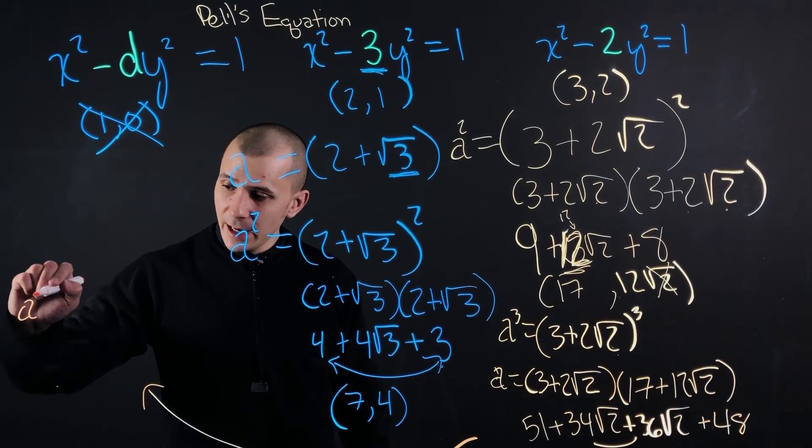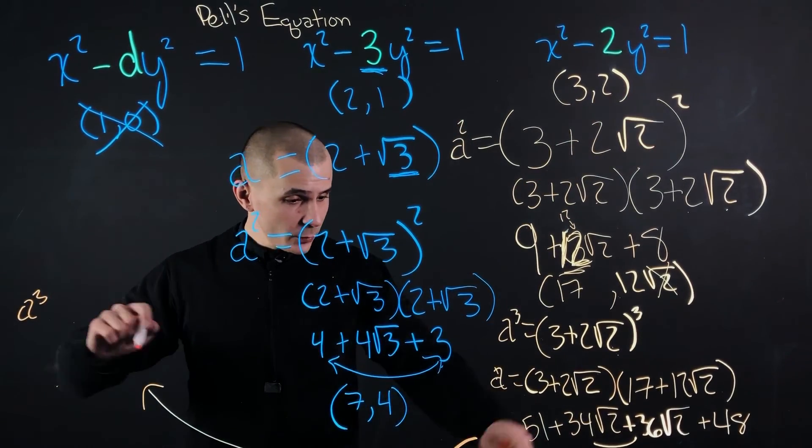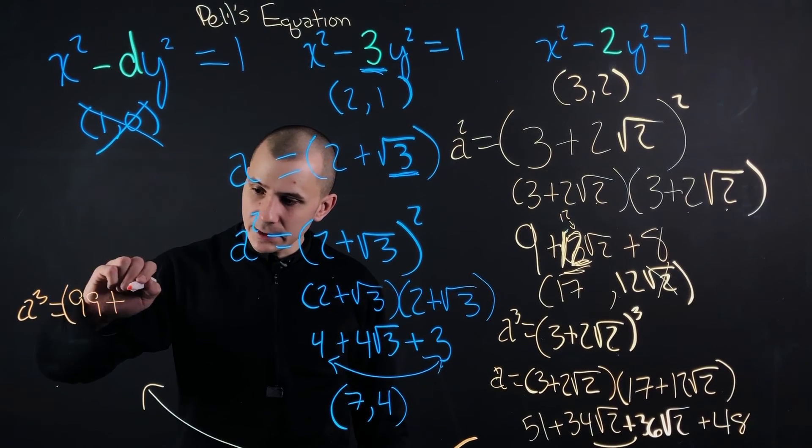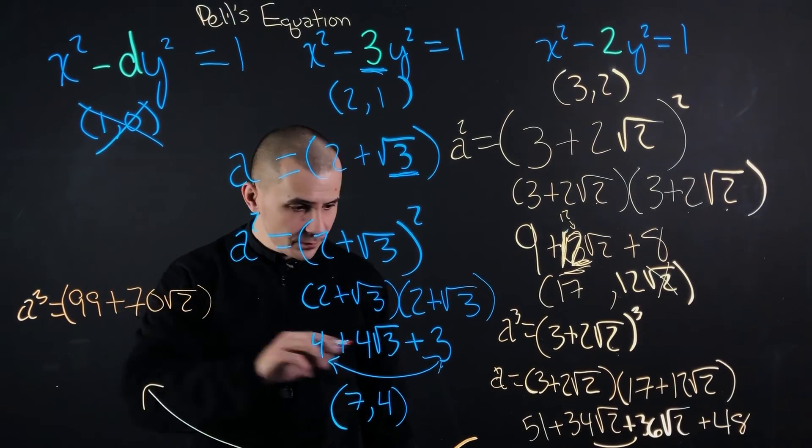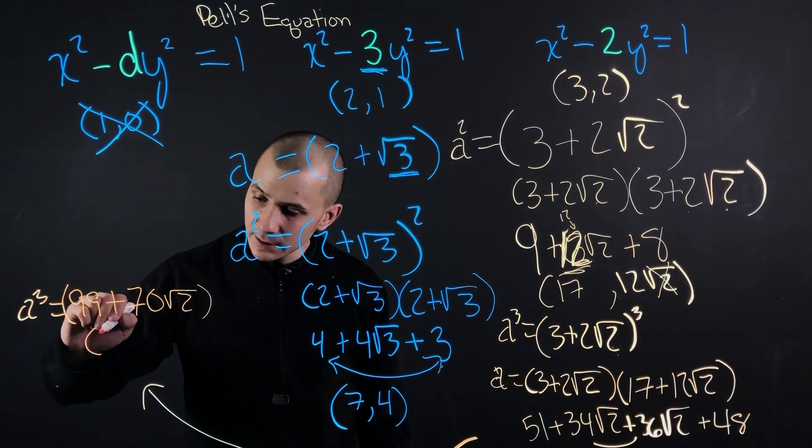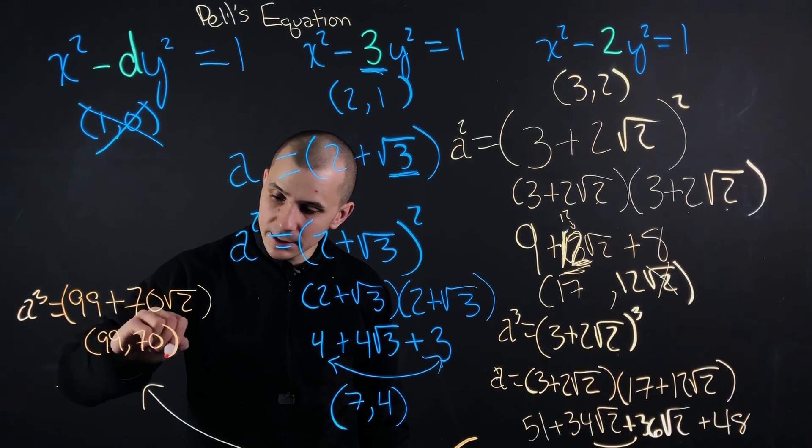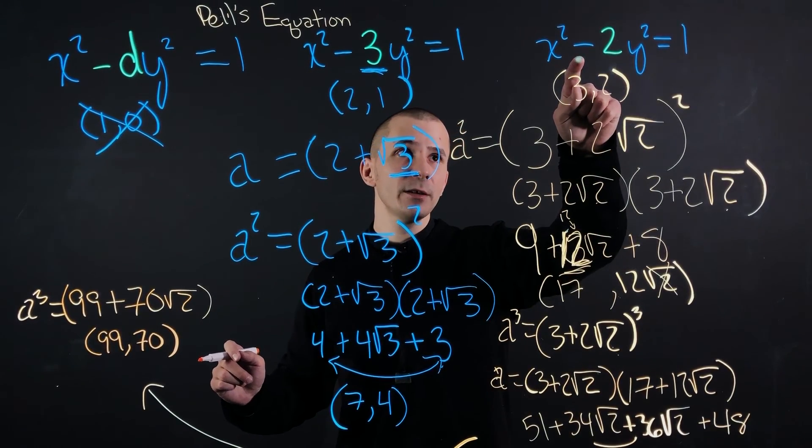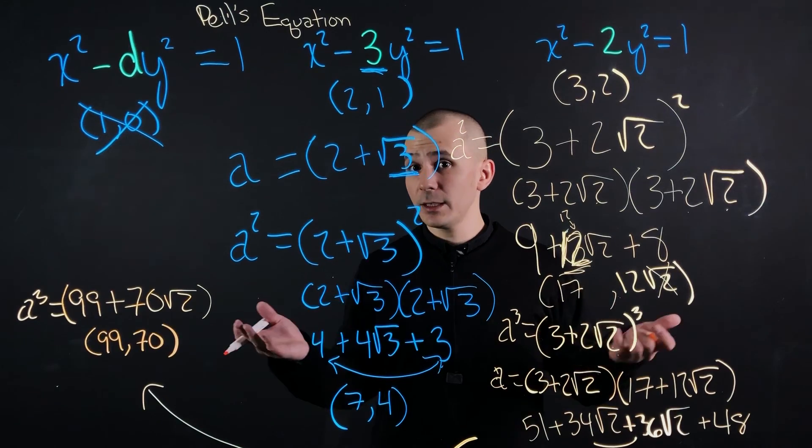All right. So our a³ for this variant is going to be 99 + 70√2. And our next solution in the sequence is going to be 99 and 70. So if you take 99 and 70 and you plug it into x² - 2y² = 1, you will get a 1.